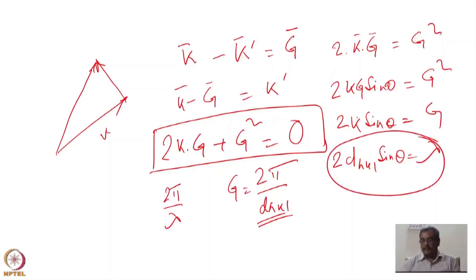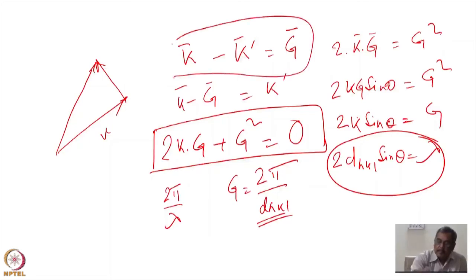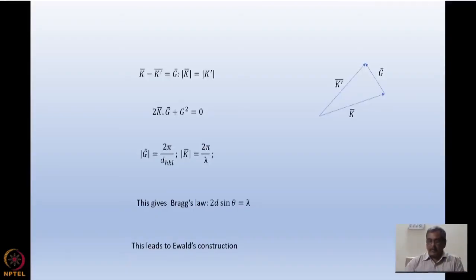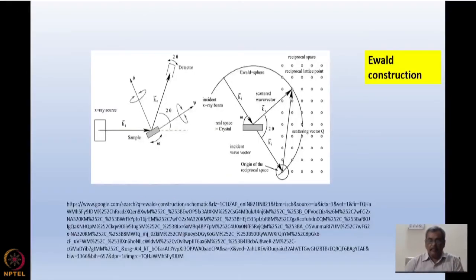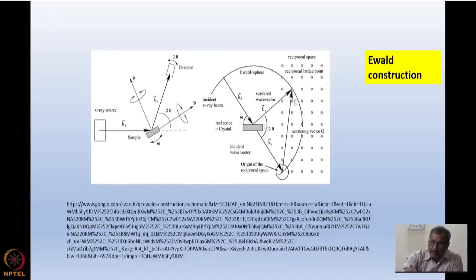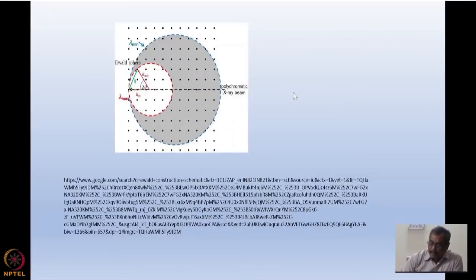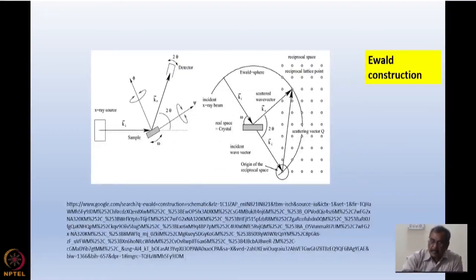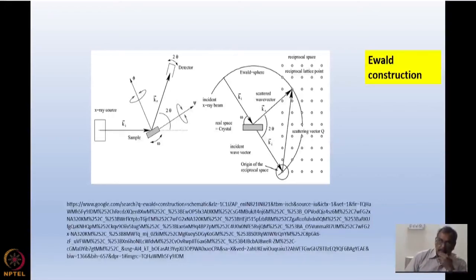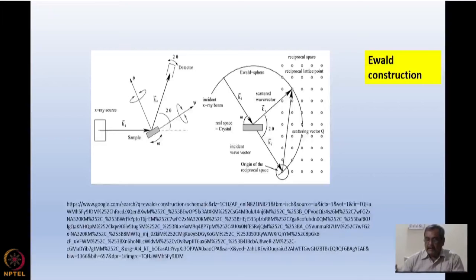Many of us started with Bragg's law, but I started with K minus K-prime equal to G, and they are equivalent as I just showed. Now I want to get back to the Ewald construction. If K minus K-prime equals G, and I consider an incident beam Ki and the scattered beam ending on a reciprocal lattice point, then whenever the equation K minus K-prime equals G is satisfied — whenever the scattered beam hits a reciprocal lattice vector — then I have a diffracted beam in that direction. This is known as the Ewald construction, the most fundamental construction in diffraction.